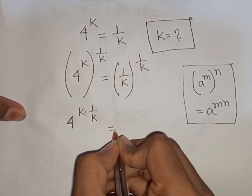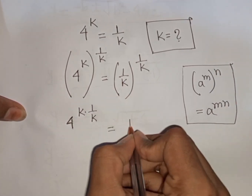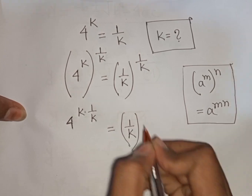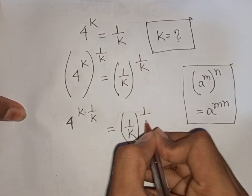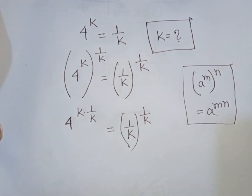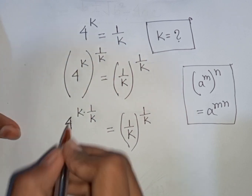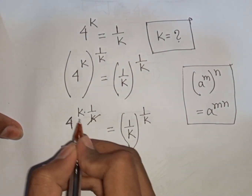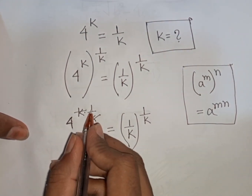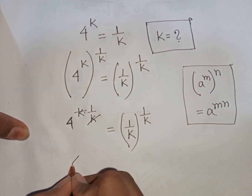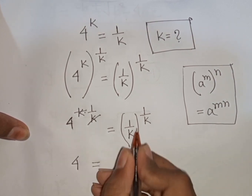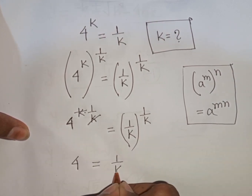On the right side, (1/k)^(1/k). The k in the exponent cancels, so we have 4^1 = (1/k)^(1/k), which simplifies to 4^(1/k) = 1/k... wait — after cancellation we have 4^(1/k) = 1/k.